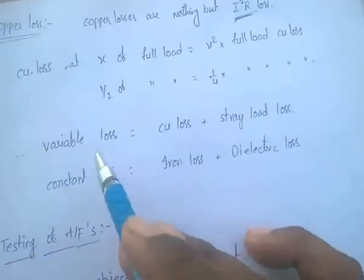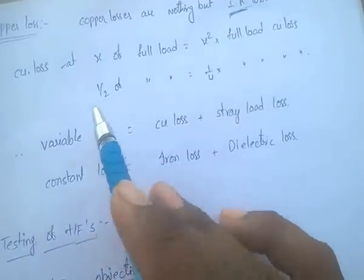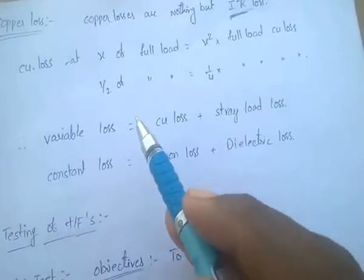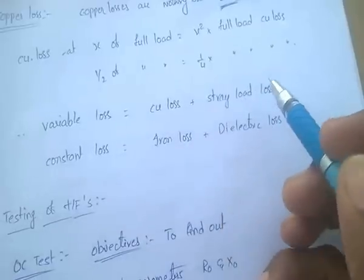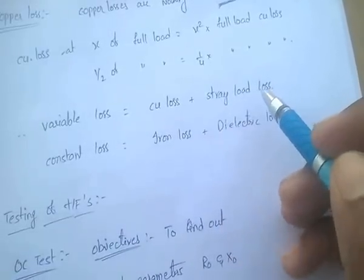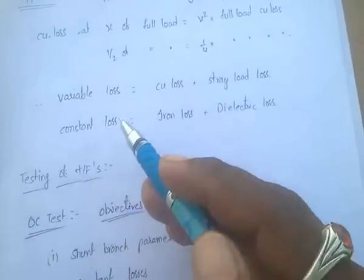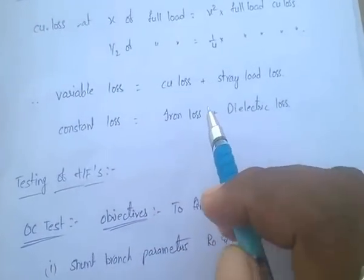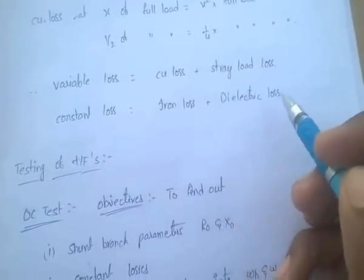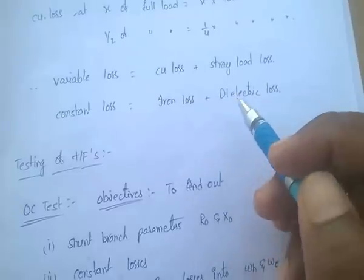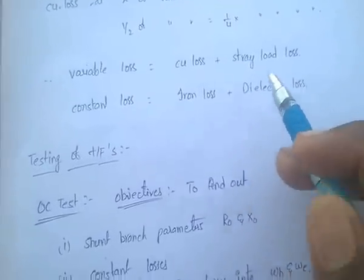Variable losses vary whenever the load varies. Variable loss equals copper loss plus stray load losses, where stray load losses are losses due to other parts of the transformer. Constant losses are iron losses plus dielectric losses. Dielectric losses occur in the dielectric parts of the transformer.